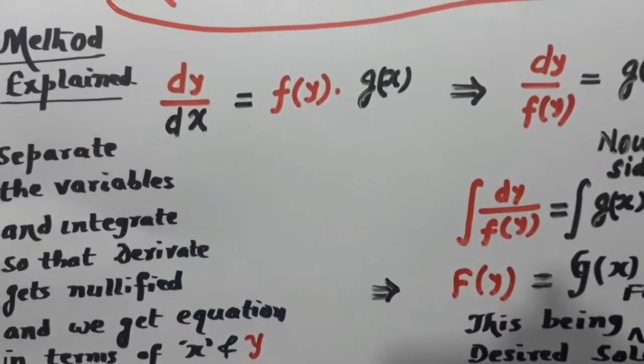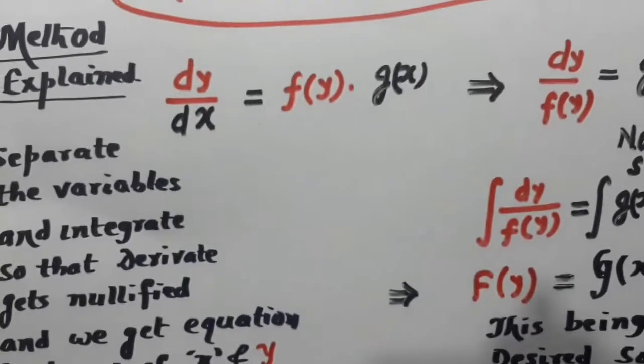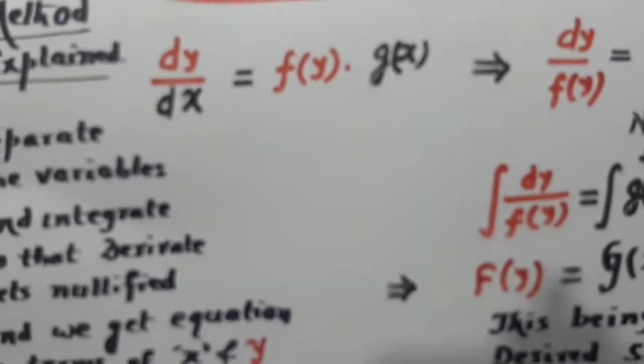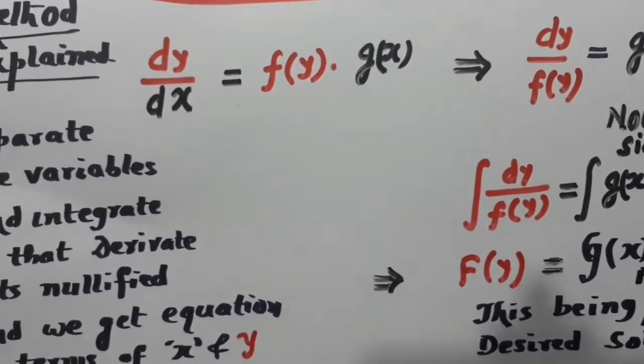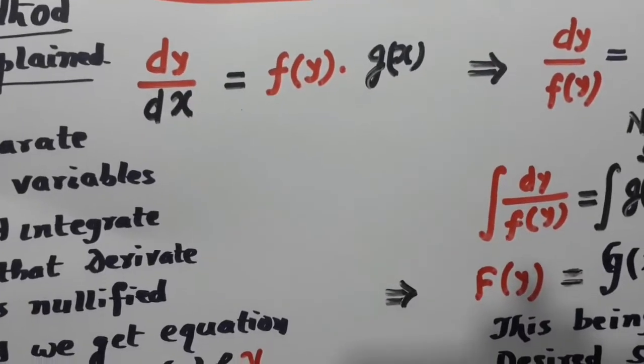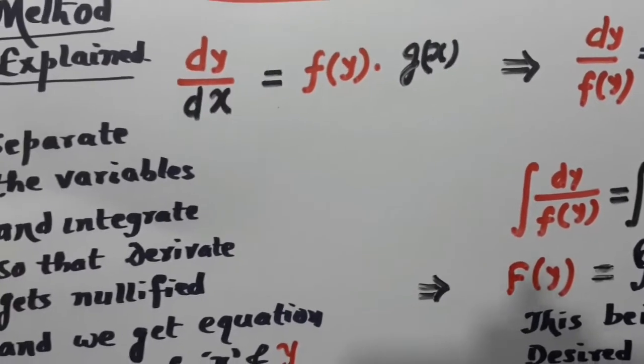Now, take dy and dx as parents, and f(x) and g(x), they are the family members. They can be girls, they can be boys.